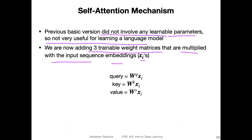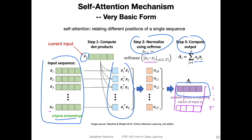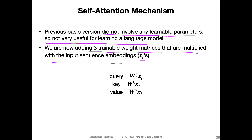Instead of just computing the dot product between the input and the query, we now involve weight matrices. We use three different types of weight matrices: W_Q corresponding to the query, W_K for the key, and W_V for the value. When we compute the matrix multiplication between word embedding x_i and W_Q, we get the so-called query vector. Similarly we get the key vector and the value vector. These are weight matrices that can be updated with backpropagation.